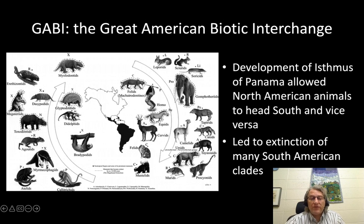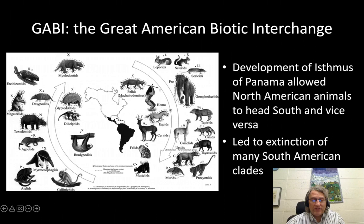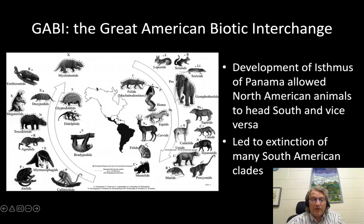Heading from the south going north, we had some monkeys. Now they didn't get very far north — they're mostly limited to Central America. Same with anteaters and sloths; we don't have them up here, or agoutis. But we have the Virginia opossum — I've got one that hangs around at home. If you ever go to the southwest, you'll find armadillos. Porcupines made it all the way up to Alaska — they're South Americans.